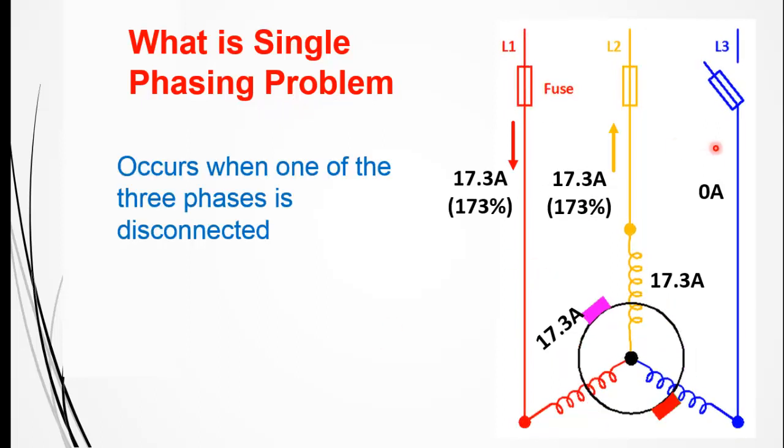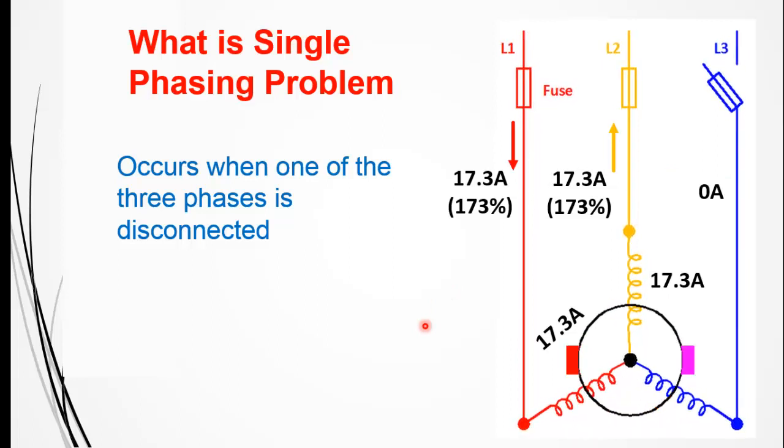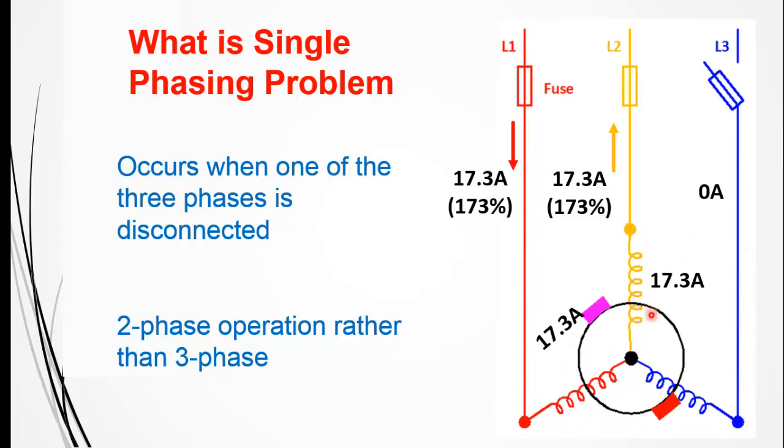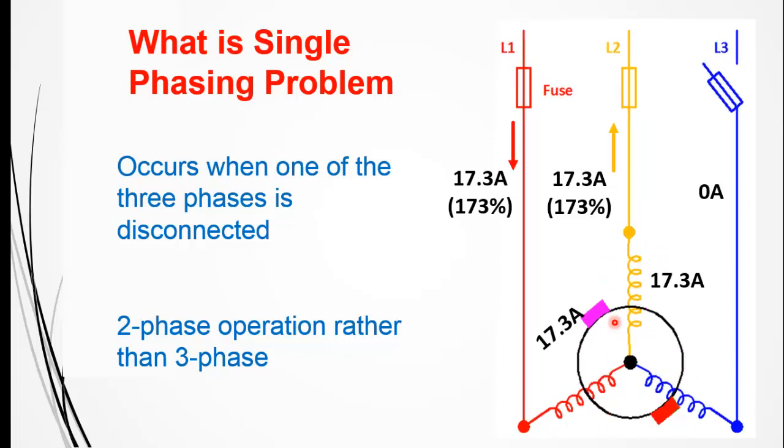It occurs when one of three phases on the motor gets disconnected or fails. This single phasing problem is the worst scenario of voltage unbalance on a three-phase motor because the motor now continuously runs on two phases instead of three. As you can see here, there is vibration and noise that appears in the motor, and I will discuss the reason why this happens later in the video.